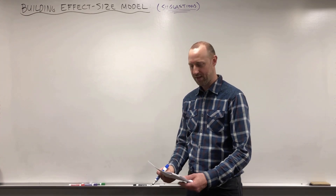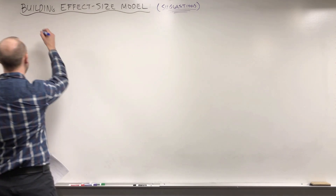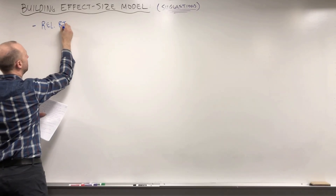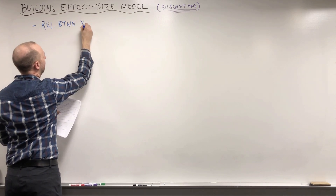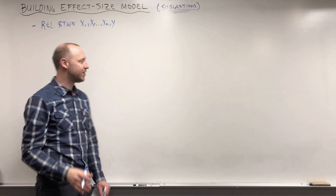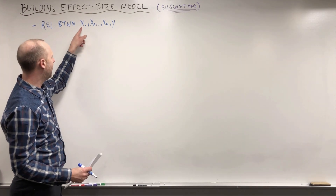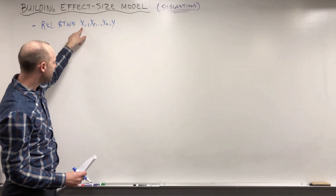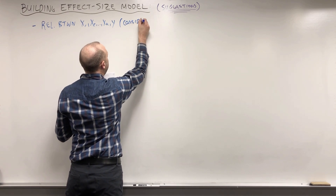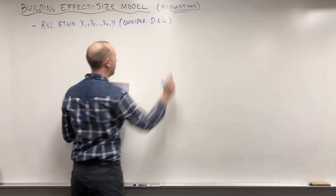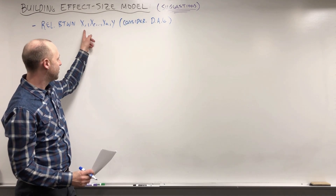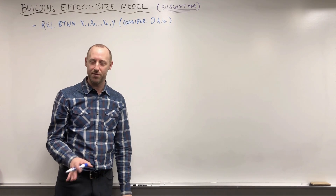One of the first things you're going to want to do is think about the relationship between X1, X2, up to Xk, and Y — how you think all those variables might be associated. You might want to consider using a DAG, which is a really useful way to describe the relationships between all these variables and help decide which variables need to be included in the model.